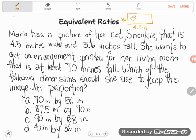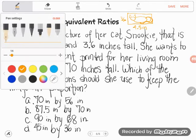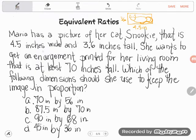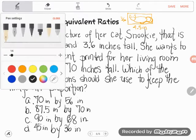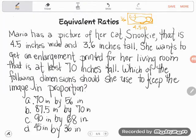So I don't know, Snooki must be like lying down or something. You guys can see why I'm a math teacher and not an artist. There's Snooki, meow. Okay, she wants to get an enlargement. Oh, I'm missing a letter. Spelling is harder than math, y'all. She wants to get an enlargement printed for her living room that is at least 70 inches tall. Which of the following dimensions should she use to keep the image in proportion?